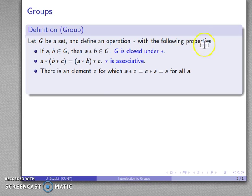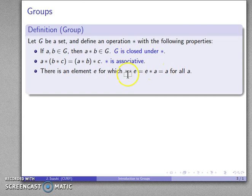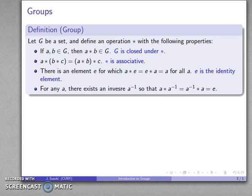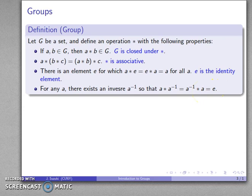One more property needed for a group: there's an element E for which A star E equals E star A equals A for all A in G. The same element E makes this true for all A — we call E the identity element. And finally, for any element A in G, there is an inverse A-inverse such that A star A-inverse equals A-inverse star A equals the identity element. If a set with an operation has all of these properties, then we have a group.